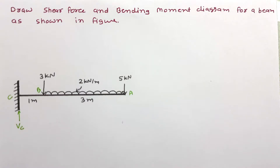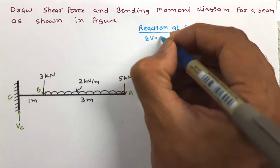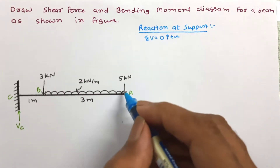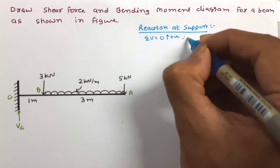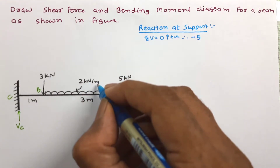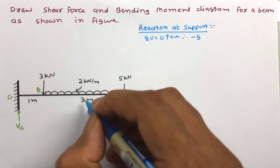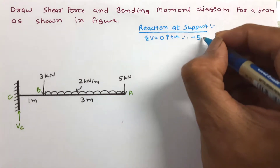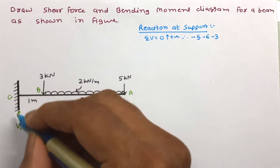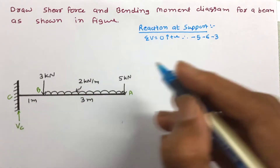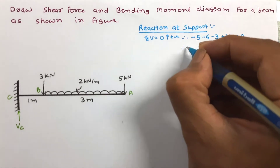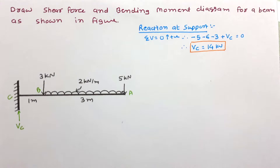Let us first work out the reaction using the condition of equilibrium — summation of all vertical forces equals 0, considering upward as positive. A 5 kN load acts downward (minus 5), UDL of 2 kN/m over 3 m gives a total load of 6 kN downward (minus 6), a point load of 3 kN acts downward (minus 3), and the support reaction acts upward (plus). On simplifying, the support reaction equals 14 kN.